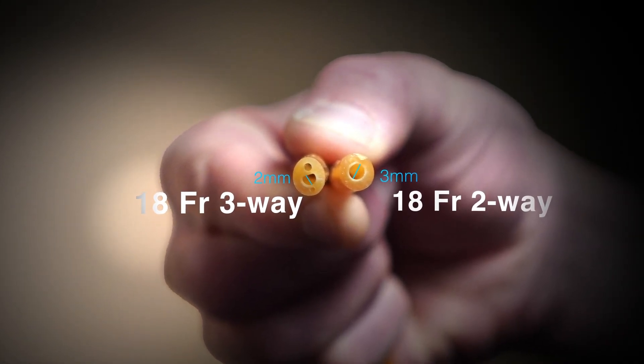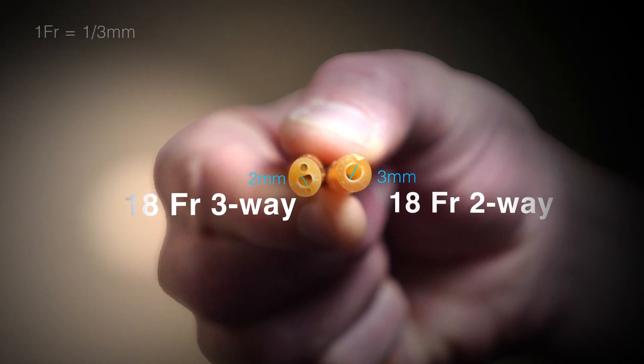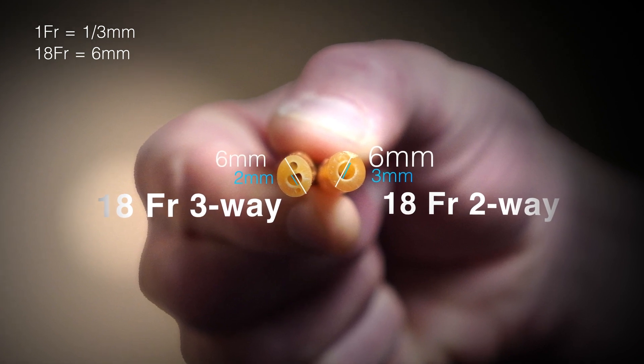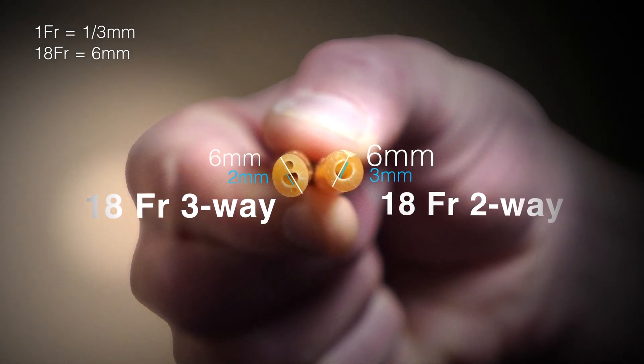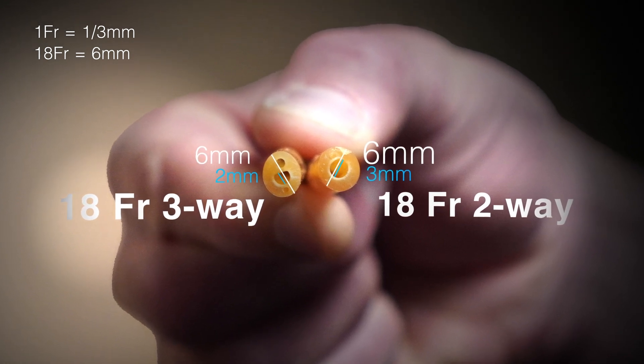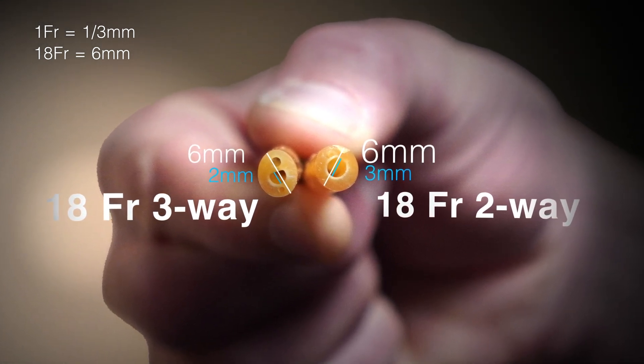The French refers to the outside diameter of the catheter. Thus, a three-way Foley catheter compared to a two-way Foley catheter of the same size has a smaller diameter of the outflow channel and may be a poor choice if we're deciding on a smaller catheter.